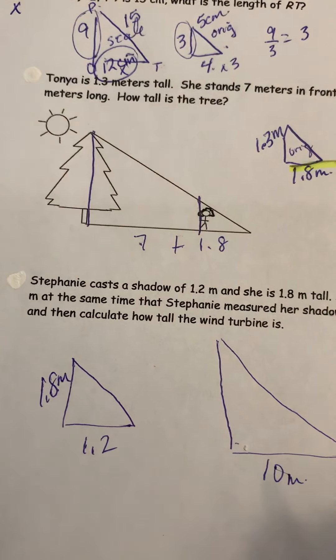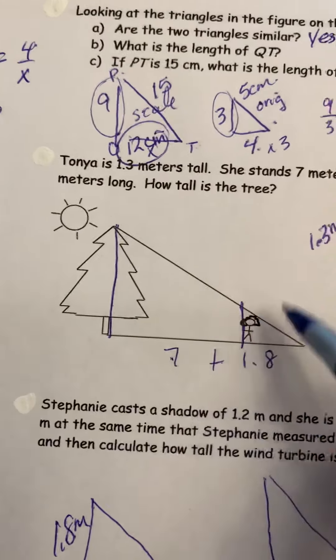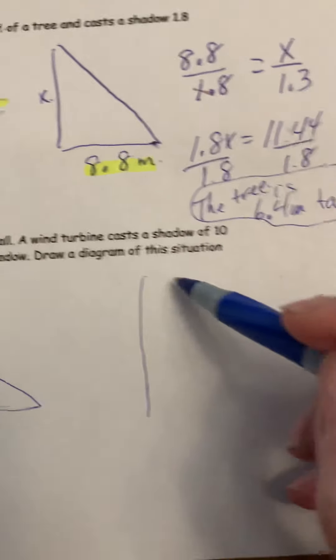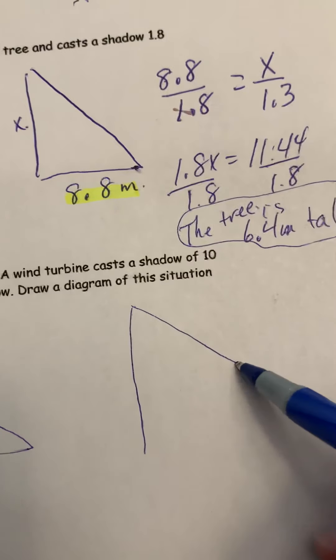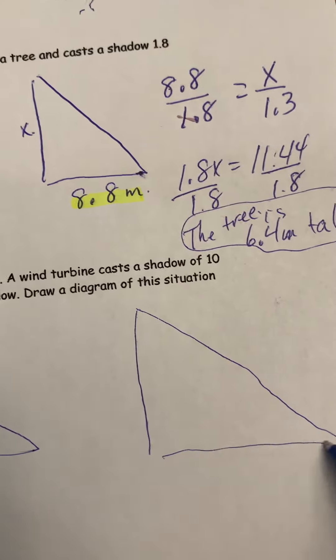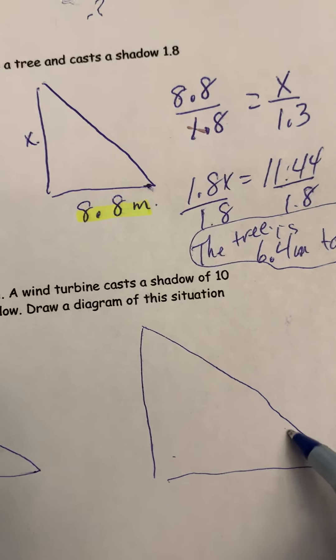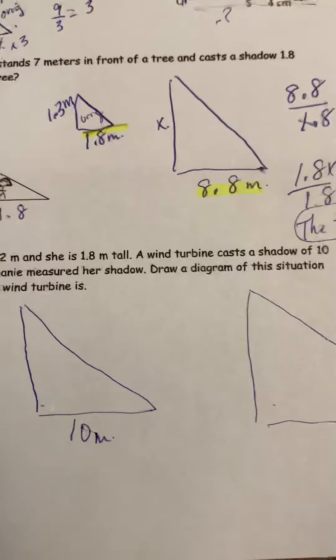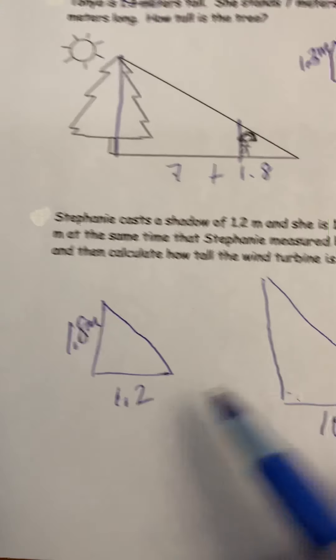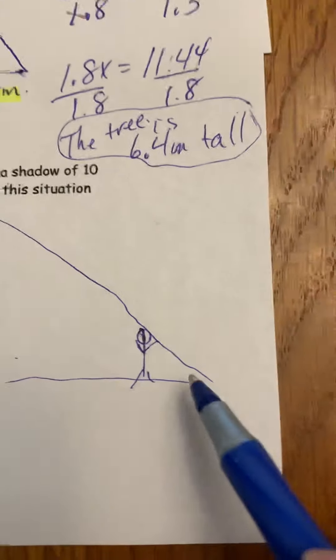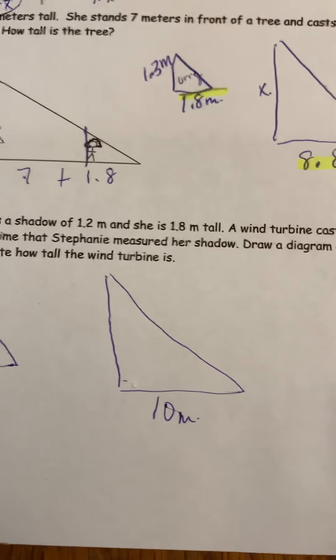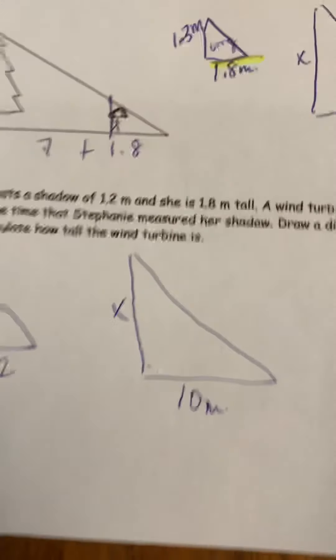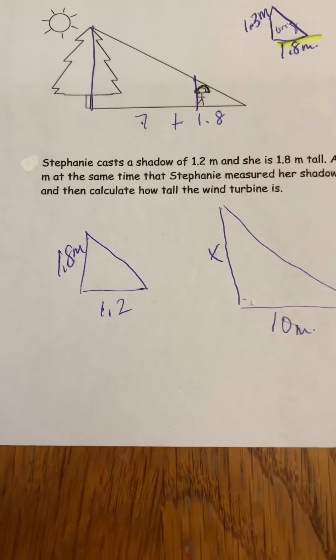So really this is what you originally draw it as, right? There's a big giant wind turbine, it's the sun is shining, and Stephanie's standing like right here. But again, I like to separate my two triangles. So here's Stephanie, here's the wind turbine. This is what the original photo would look like. Draw a diagram of the situation and then calculate how tall the wind turbine is. Do we have corresponding sides? Yes we do.